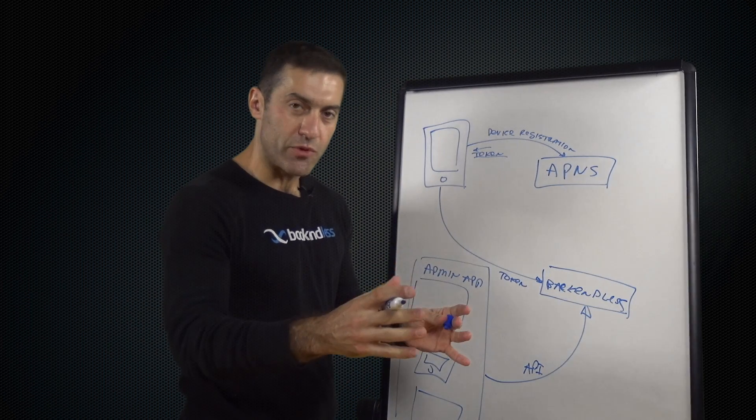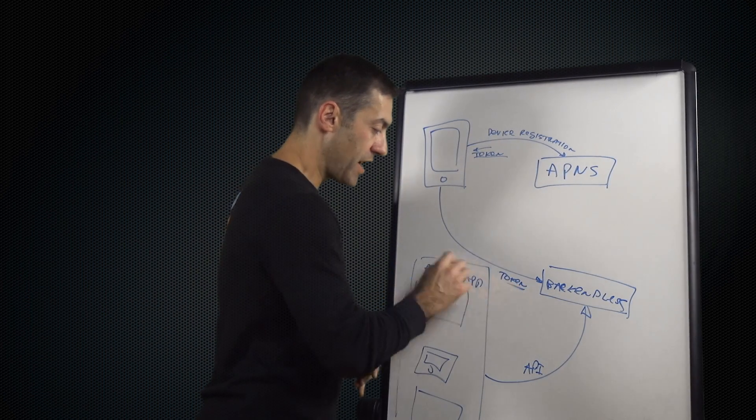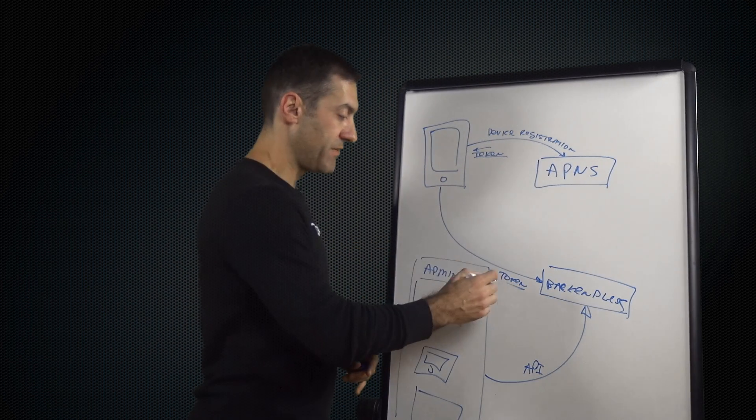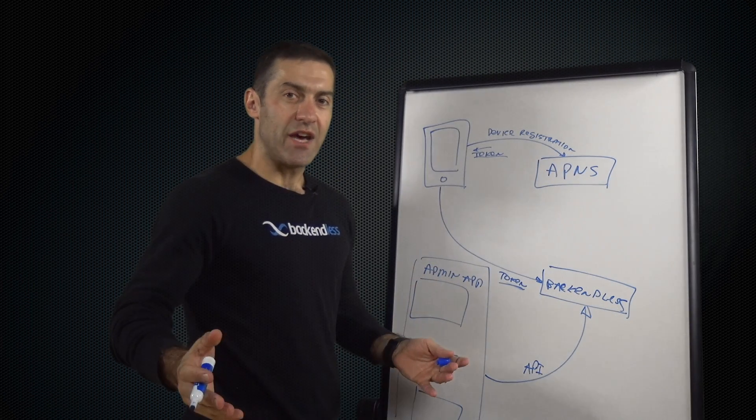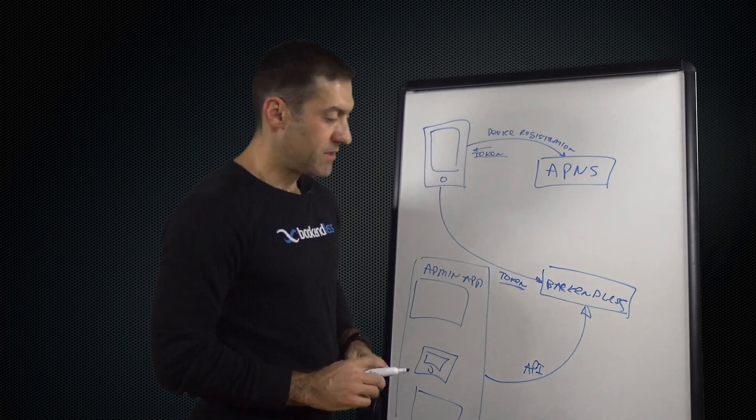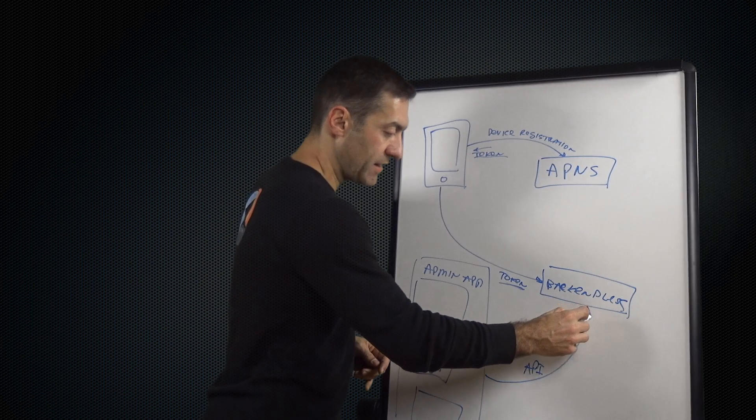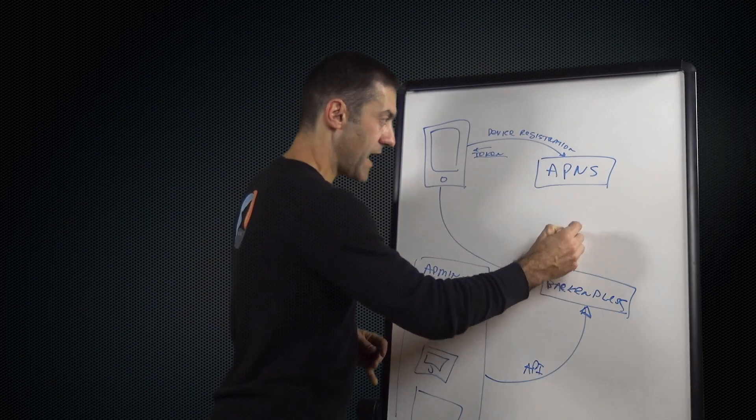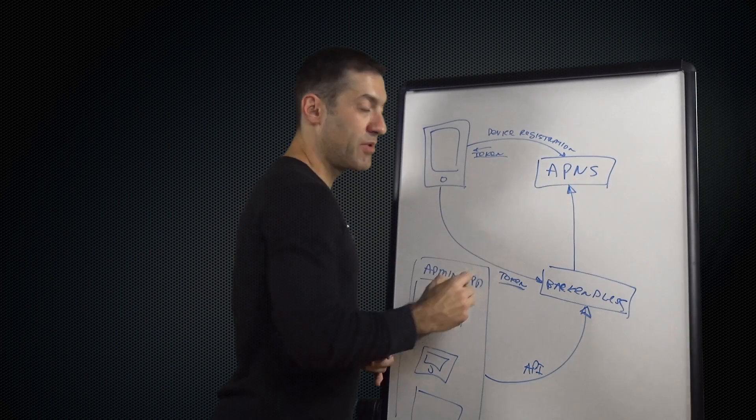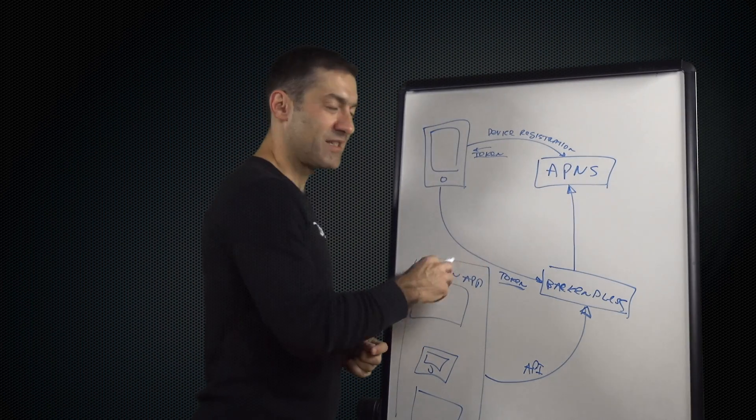So we provide an API where you can send out a push notification to target a particular device identified by either its token, or you can say, send it out to all iOS devices. And then in this case, Backendless takes the information for your push notification and contacts APNS, Apple Push Notification Service.